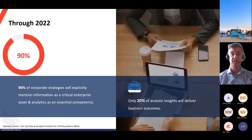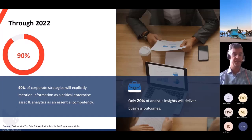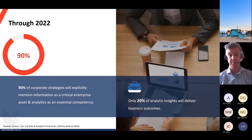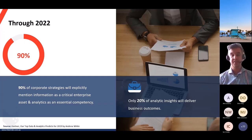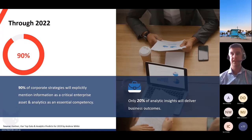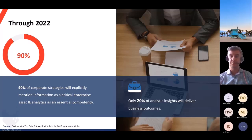I always like to start a presentation with some stats. Through 2020, 90% of corporate strategies explicitly mentioned information as a critical enterprise asset and analytics as an essential competency. A Gartner report from 2019 found that even though businesses are doing this, only 20% of analytic insights will deliver business outcomes — meaning 80% of your effort in the analytics space will not deliver any benefit to your organization.